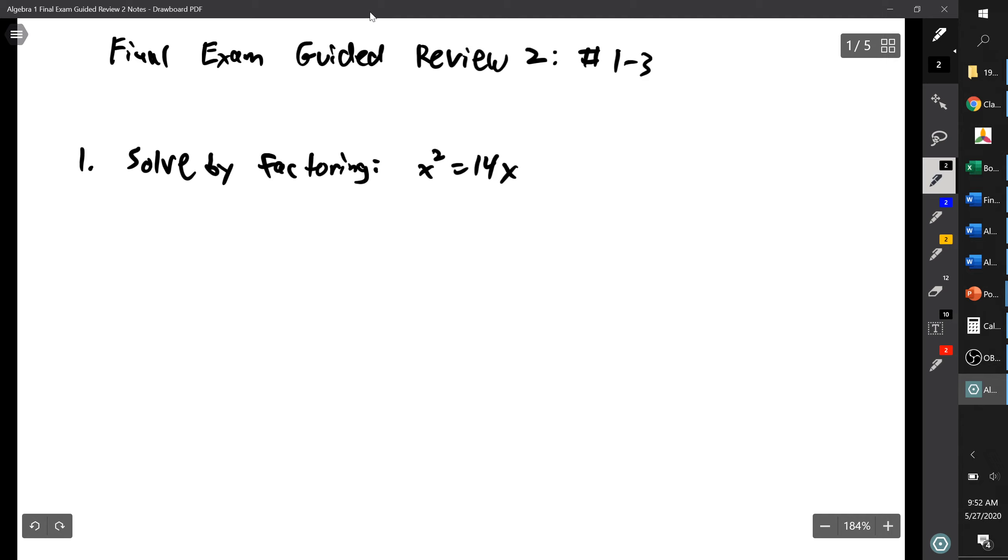Solve by factoring. So whenever you need to solve by factoring, you need to start out with equals zero. So we got to get everything on one side. I'm going to start out subtracting, so we're taking our original thing equals 14x and we're going to subtract 14x from both sides. And what that'll give me is x squared minus 14x equals zero.